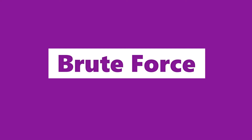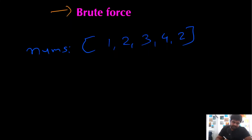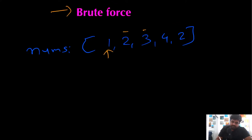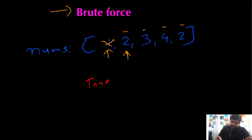Let's see what the different approaches to solve this problem would be. In the brute force approach, what we are going to do is compare every single value with all the other values present inside the given array. We take value 1 and check if it appears again in the rest of the array — it does not, so we move on. We then check value 2, and we find that it does appear again, so the moment we identify that, we can return true immediately that this input contains duplicates.